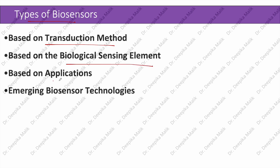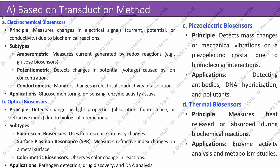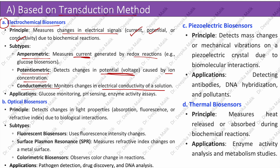Biosensors can be categorized based on transduction methods, biological sensing elements, applications, and emerging technologies. Based on transduction methods: electrochemical biosensors measure changes in electrical signals such as current, potential, or conductivity due to biochemical reactions. Amperometric biosensors measure current generated by redox reactions (e.g., glucose biosensors). Potentiometric biosensors detect changes in potential or voltage caused by ion concentration. Conductometric biosensors monitor changes in electrical conductivity of a solution. They are used for glucose monitoring, pH sensing, and enzyme activity assays.